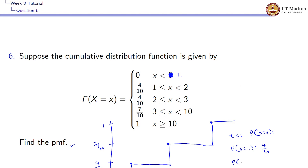Exactly at x = 3 we will be having a cumulative probability of 7/10, which means that P(X = 1) + P(X = 2) + P(X = 3) = 7/10.